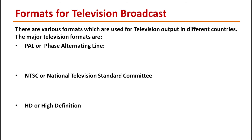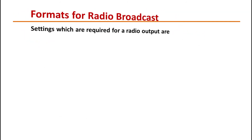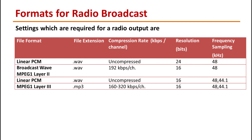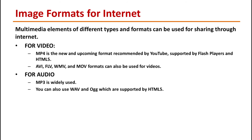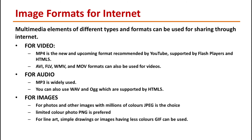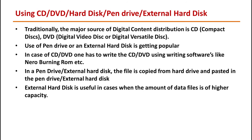There are various formats used for television output in different countries. The major television formats are PAL (Phase Alternating Lines), NTSC (National Television Standard Committee), and HD (High Definition). For radio broadcast, you can use both compressed and uncompressed audio files. MP4 is the new and upcoming format for internet video. For audio on the internet, MP3 is widely used. For images on the internet, JPEG, PNG, and GIF formats are widely used. Traditionally, compact discs and DVDs are the most preferred choice for digital content distribution. You can also use a pen drive or external hard disk to copy files; external hard disks are useful when the amount of data is of higher capacity.